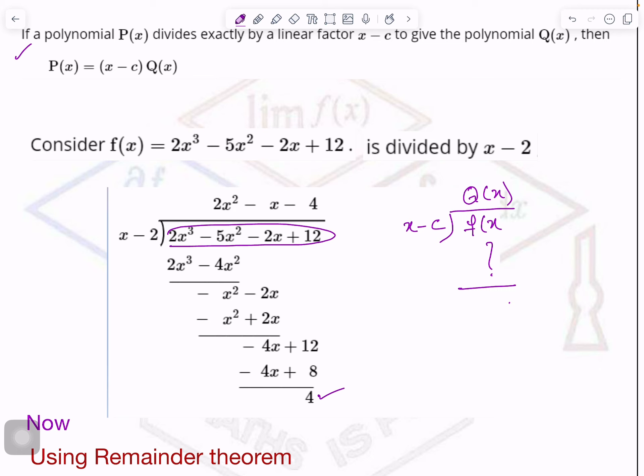Now one thing is very clear. Whatever is your divisor, from the divisor you take the value of x and you plug it in the polynomial. When you write it like this, this whole thing gives you remainder. And if the remainder is 0, then this gives you factor. This is what we have seen in the previous video.